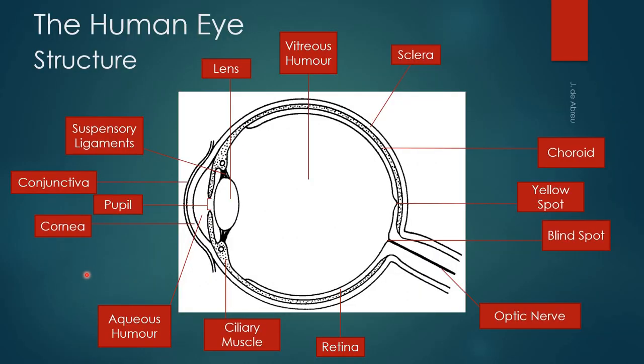So we have the structure of the eye, and this looks like a very busy slide, but we're going to do it step by step. I'm going to start from the outside inwards, and then I'm going to cover the three layers of the eye, which is the sclera, the choroid, and the retina.